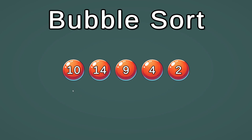This is how the bubble sort algorithm works. It starts with the first elements — in this case, 10 and 14 — and makes sure they are in the correct order. Since 10 is less than 14, they are already in the correct order.